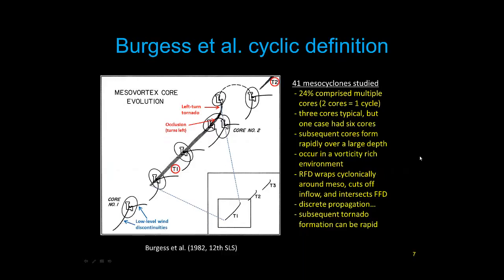Going back to the research, Don Burgess put forth a conceptual model back in 1982 at the 12th Conference of Severe Local Storms. It's a classic model that has largely stood the test of time. This large box is a blowup from the inset that tracks Tornado 1. Initially, it started out with a supercell mesocyclone core and what they called low-level wind discontinuities — essentially your rear flank gust front and forward flank gust front. With time, a surge in RFD begins to occlude and develop a tornado.